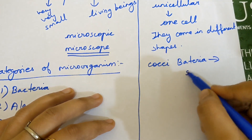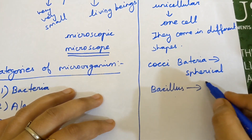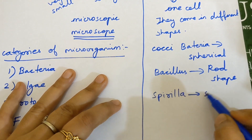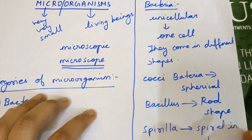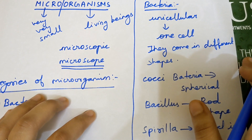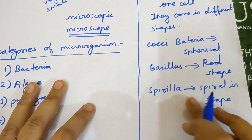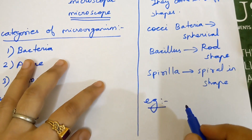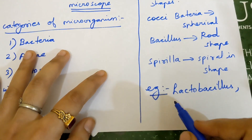For example, cocci bacteria is spherical in shape. Bacillus bacteria is rod-shaped. Spirulo bacteria is spiral in shape. So if someone asks you about bacteria, the first point is it is unicellular — made up of a single cell — and the second point is they come in different shapes. Two examples of bacteria are Lactobacillus and Rhizobium.